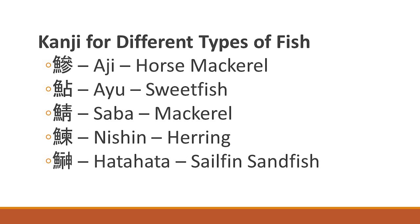We have Aji, which refers to horse mackerel; Ayu, sweet fish; Saba, mackerel; Nishin, herring; Hata-hata, sailfish and sandfish. Looking at all these different kanji for the different types of fish, it's clear that the Japanese place high importance on fish in their cuisine.